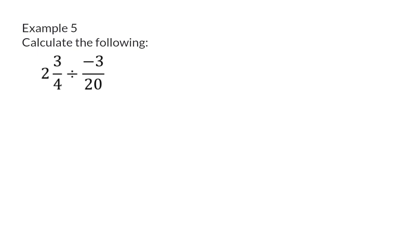Example 5. Calculate the following. Here we have a mixed number that we now need to divide by minus 3 over 20. And as mentioned in the previous video, you always first change mixed numbers to improper fractions. Here we will then have 11 over 4. Next, I'm going to change the division to multiplication and that means I will have to use the reciprocal of the fraction after that, and that will be 20 over minus 3. Now, I can simplify by dividing top and bottom by 4. And lastly, I will multiply the numerator and multiply the denominator.